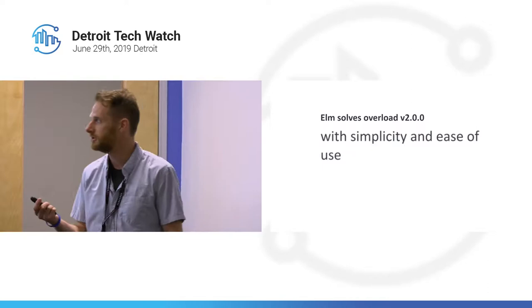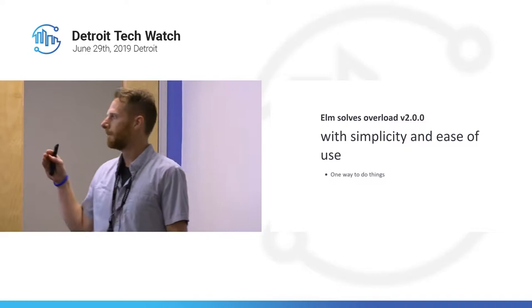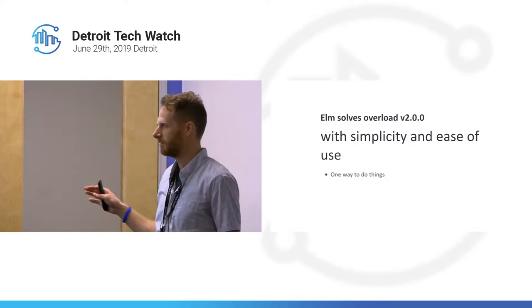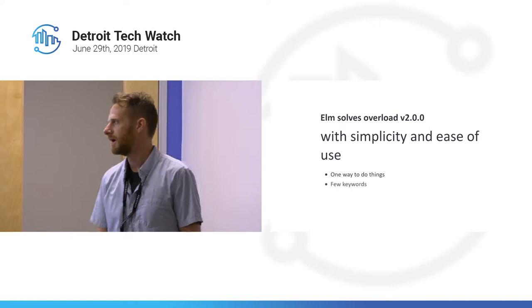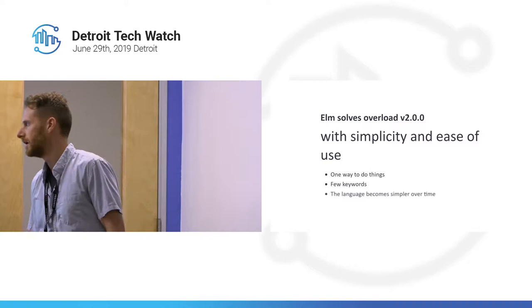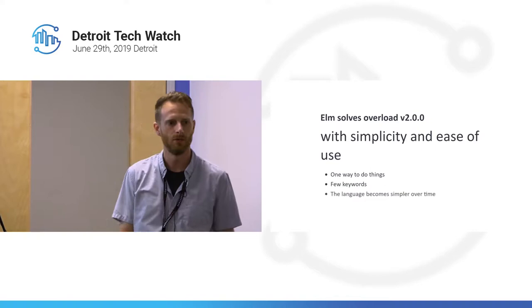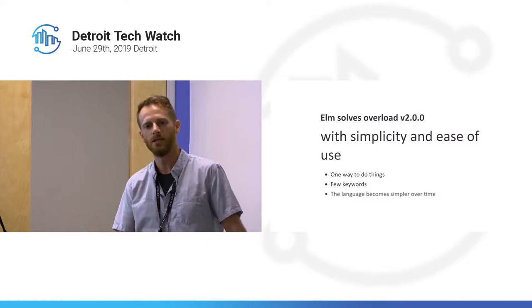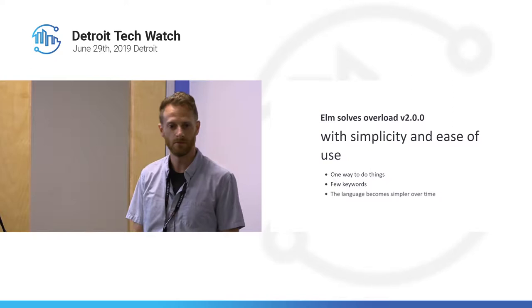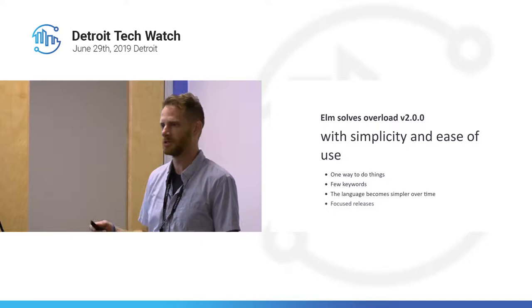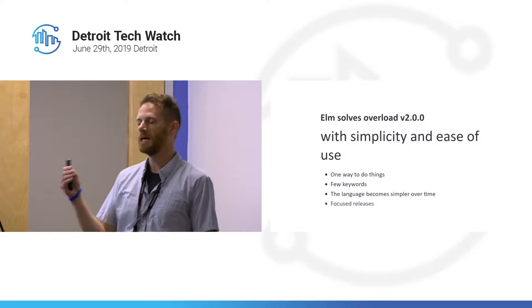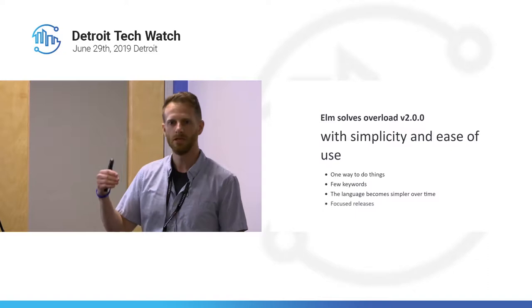Elm solves this with its simplicity and ease of use. There's an intentional one way to do things in Elm, coming from all the way from the very creator of Elm, Evan Czaplicki. This leads to a few keywords in the language, and it can actually become simpler over time. Because there's a compiler, if they find that something is confusing — and this has happened — they will change the way it works in the language. You get the new version, run your compiler, change that thing, it compiles, and now you have simpler code. They have focused releases, meaning they really focus on creating nice APIs and making the language easier to use over time. That, to me, makes me a happier developer.